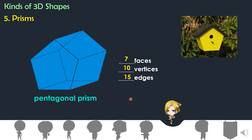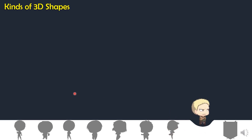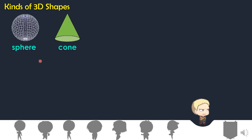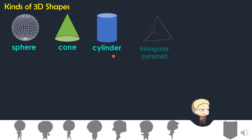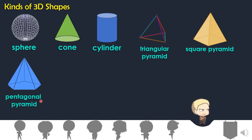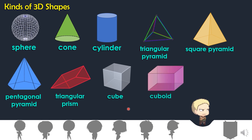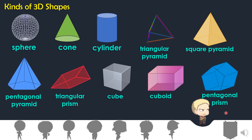Here is an example of pentagonal prism — a birdhouse and also a box in the shape of a pentagonal prism. So that's all for today class. Let's review our topic. Different kinds of 3D shapes: sphere, cone, cylinder, triangular pyramid, square pyramid, pentagonal pyramid, triangular prism, cube, cuboid, and pentagonal prism.